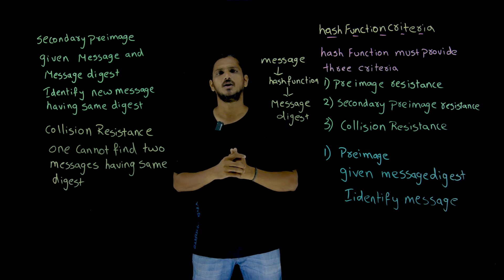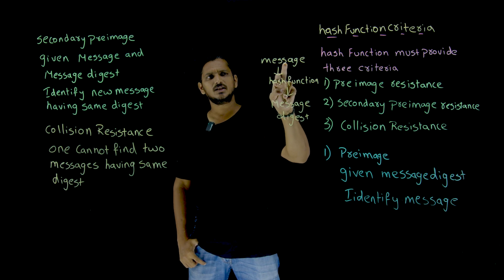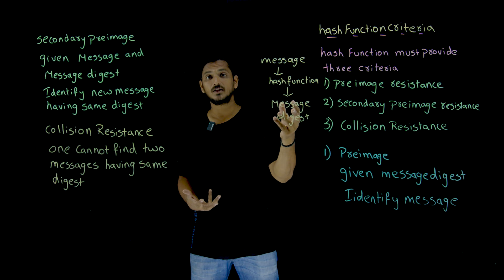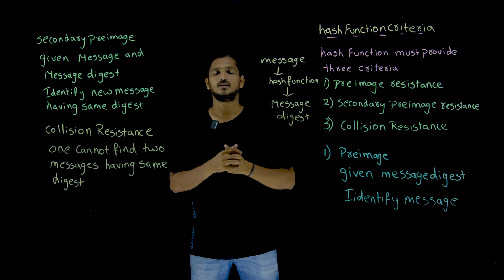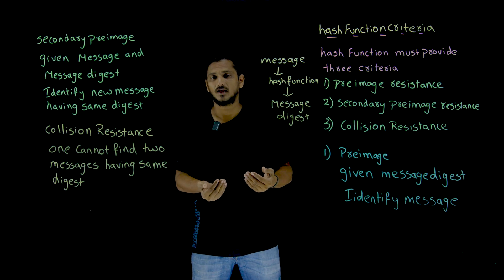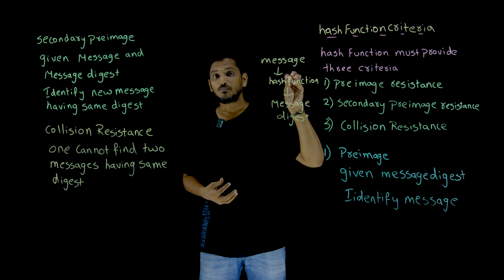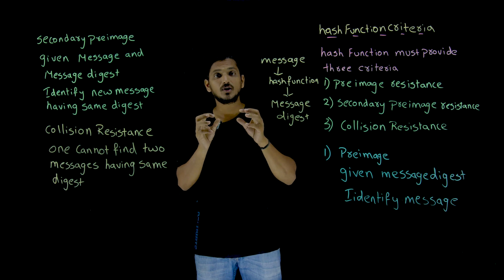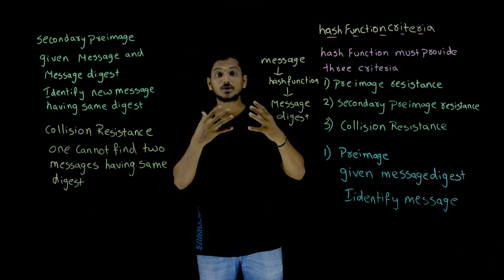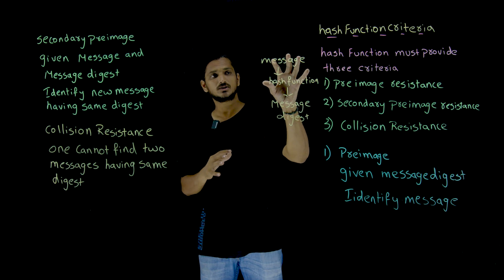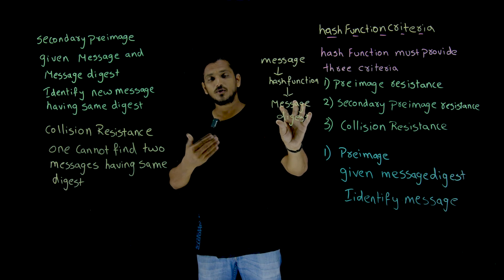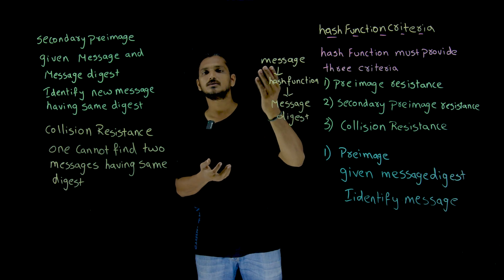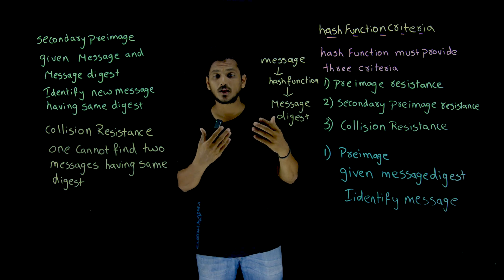What happens is we take a message and send it into the hash function. The hash function generates a message digest. Using this message digest we are going to identify whether our message has been modified or not — this is how we provide message integrity. Now we need to understand what types of attacks we are going to have, and we need to design a hash function that should be very resistant to those attacks. If the complexity of the hash function is very easy, then we can easily convert the message digest back to the message, so it has to provide sufficient complexity.